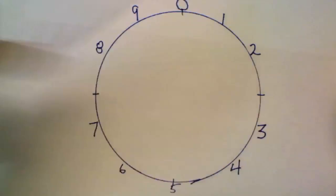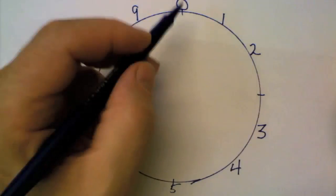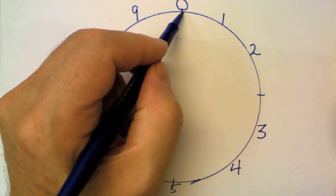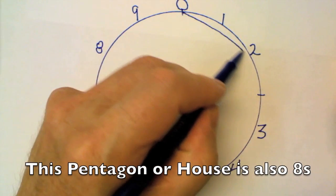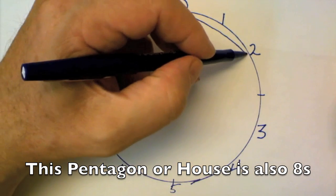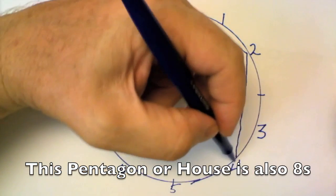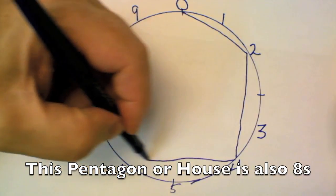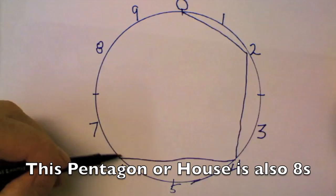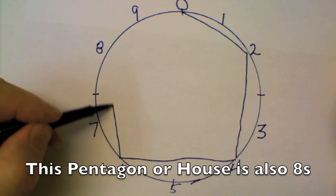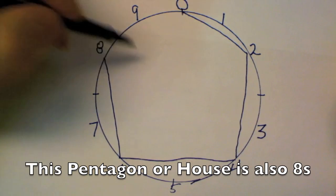We can have fun with it and create the twos. So 0 to 2, then 2 to 4, then 4 to 6, then 6 to 8, and then 8 to 0.